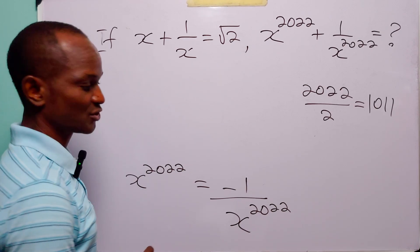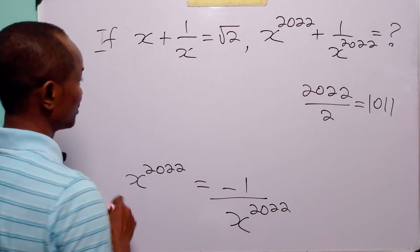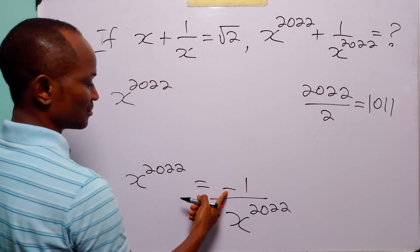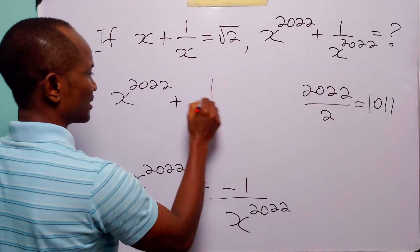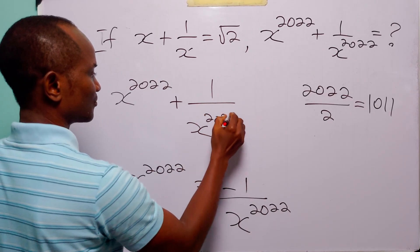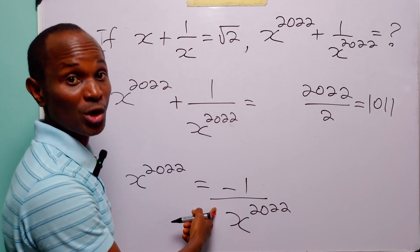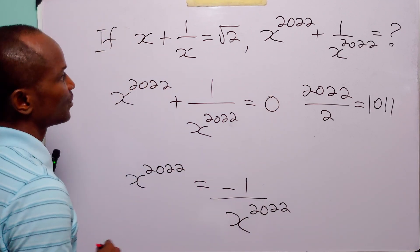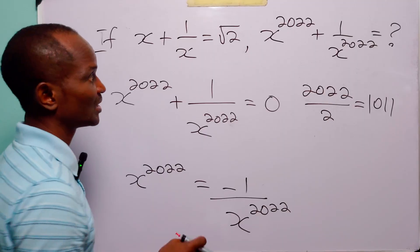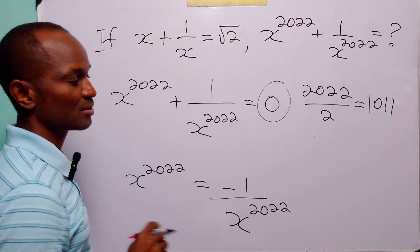Now, once more, all we have to do is rewrite this equation. We move this over to the left-hand side of the equation. When we do that, we have x to the power 2,022 plus 1 over x to the power 2,022 is equal to 0, because that is all that is left on the right-hand side. So, if x plus 1 over x is equal to root 2, then x to the power 2,022 plus 1 over x to the power 2,022 is equal to 0.